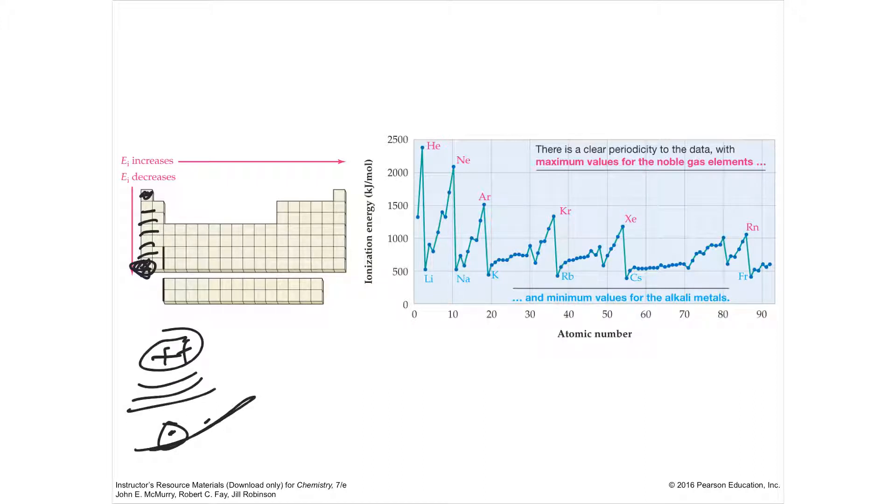So as you go across the row, the effective nuclear charge is higher and higher, pulling it closer and closer. We saw that the atomic radius got smaller as you went across the row because it's being tightly held closer to the nucleus. If it's held in closer, it's going to be harder to steal that electron. The less guarded it is, the cheaper. The more guarded it is, the more expensive.